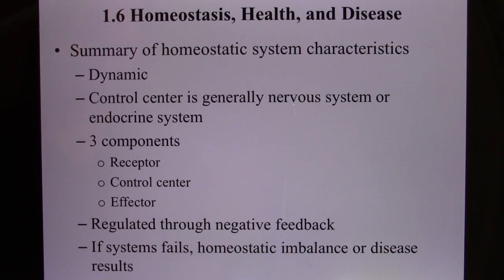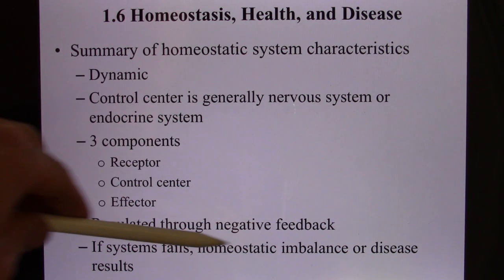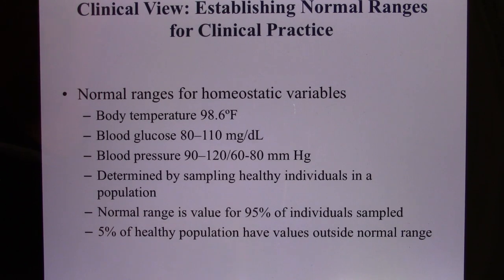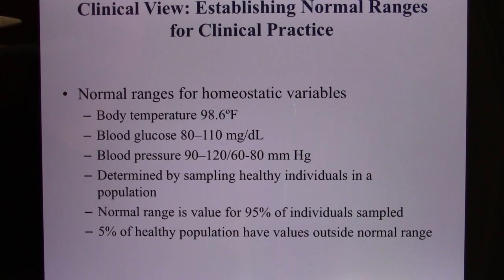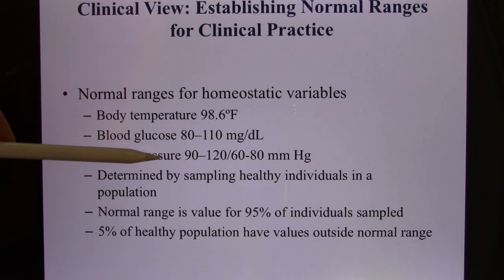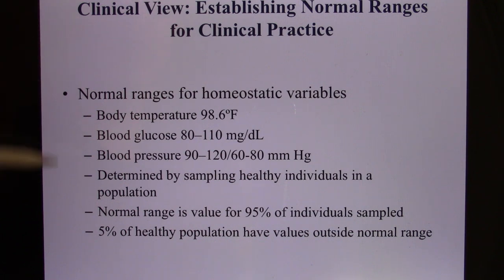Negative feedback can maintain a stable environment. These slides tell you your body wants a stable environment, so it goes through the regulation of negative feedback. If this system fails, you're going to get sick. We all experience it — a fever when body temperature goes too high, blood sugar going out of control (that could be diabetes), and blood pressure going too high or too low. Your body wants to maintain a stable environment. Okay, that's it.